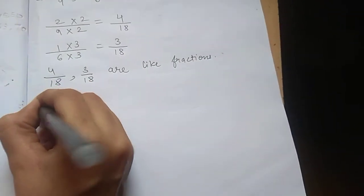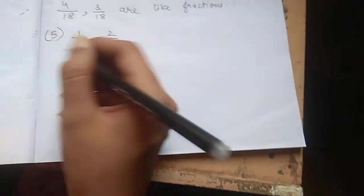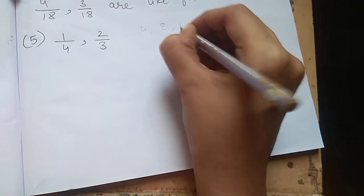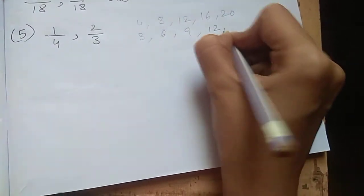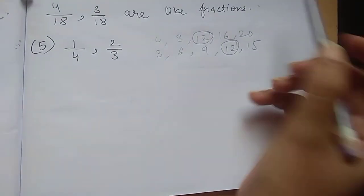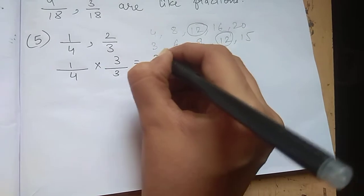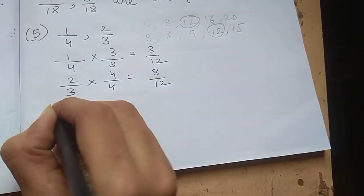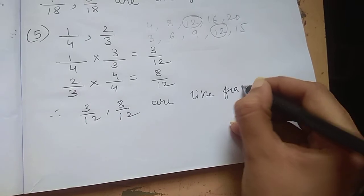Fifth one: 1 by 4, 2 by 3. So 4 and 3, let's see. 4 1s are 4, 4 2s are 8, 4 3s are 12, 4 4s are 16, 4 5s are 20. 3 1s are 3, 3 2s are 6, 3 3s are 9, 3 4s are 12, 3 5s are 15. See 12, we are getting here 12, means denominator should be 12. Therefore, 3 by 12 and 8 by 12 are like fractions.